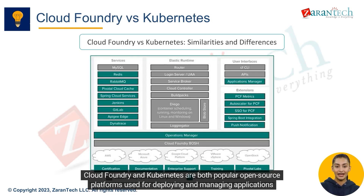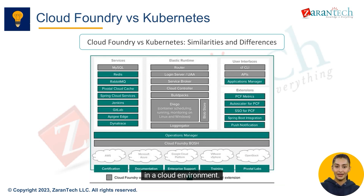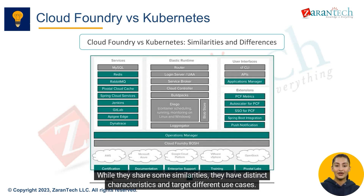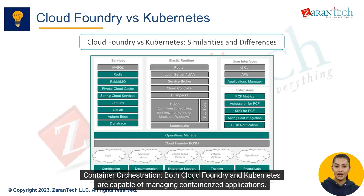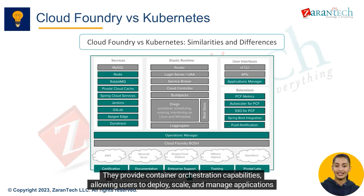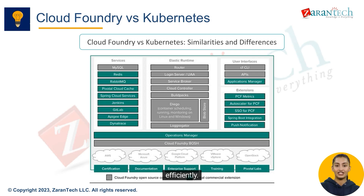Cloud Foundry and Kubernetes are both popular open source platforms used for deploying and managing applications in a cloud environment. While they share some similarities, they have distinct characteristics and target different use cases. One key similarity is container orchestration: both platforms are capable of managing containerized applications, allowing users to deploy, scale, and manage applications efficiently.